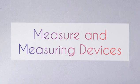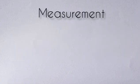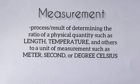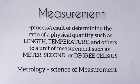After the history of systems of measurements, let's proceed to measure and measuring devices. Measurement is the process or the result of determining the ratio of a physical quantity such as length, time, temperature, and others to a unit of measurement such as the meter, second, or degree Celsius. The science of measurement is called metrology.